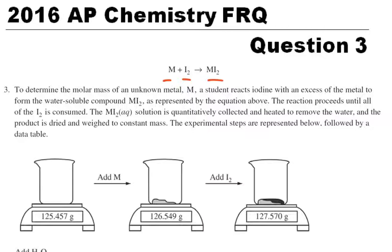We're seeing that we have excess of the metal, that's important, and that it's going to be a water-soluble compound, MI2. The reaction proceeds until all of the I2 is consumed. The MI2 solution is quantitatively collected, so we're going to measure things, and heated to remove the water when the product is dried and weighed to constant mass.